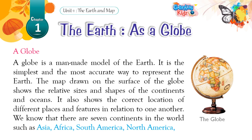A globe is a man-made model of the Earth. It is the simplest and the most accurate way to represent the Earth. The map drawn on the surface of the globe shows the relative sizes and shapes of the continents and oceans.